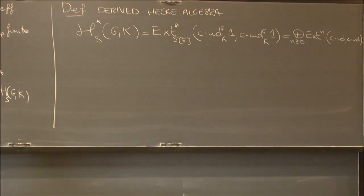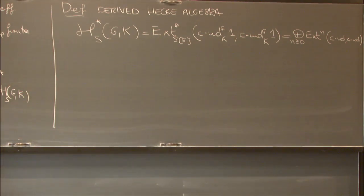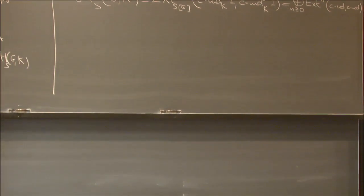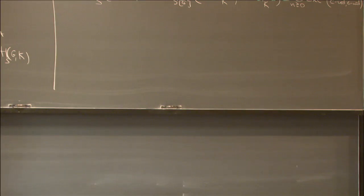Question from audience: In which abelian category do you define Ext groups? Answer: I'm working with smooth representations of G with coefficients in S. So this is my notation for smooth G-modules with S-coefficients.